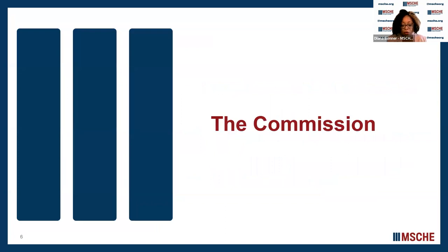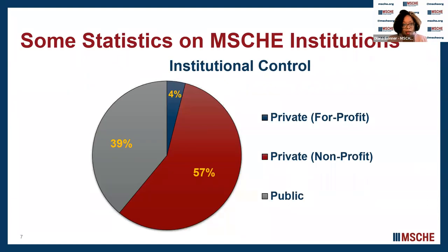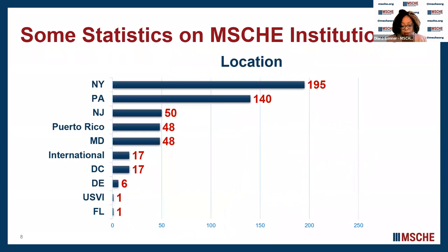For those of you who are new or just becoming oriented to the Middle States Commission on Higher Education, I'd like to present a few introductory remarks. Here we see some statistics on Middle States institutions. Our member institutions are 523 in number, and they represent approximately 4.5 million students. Institutions are located in 23 jurisdictions, including 14 international locales.